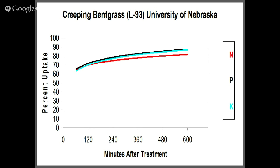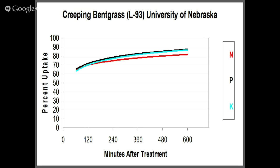Looking at other nutrients, magnesium and calcium — nutrients that have a higher valency or are larger in diameter — have a lower permeability coefficient, so they don't get into the plant through the foliage as efficiently as some other nutrients because of their charge and size. There's a lag, with only about 35 percent uptake within 60 minutes, then it increases over time — different from nitrogen, phosphorus, and potassium.